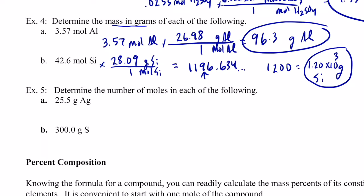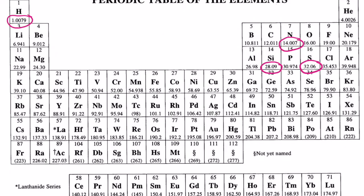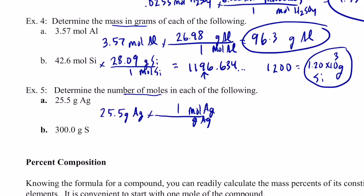Example 5: going from grams to moles. I have 25.5 grams of silver — grams on the bottom, moles on top, one per mole. The atomic mass of silver is 107.87 grams per mole. So 25.5 divided by 107.87 gives us, to three significant figures, 0.236 moles of silver.